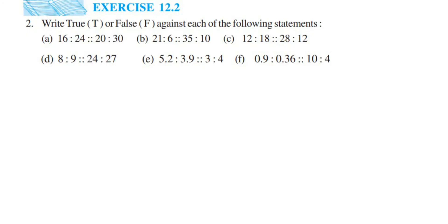Hey everyone, this is question 2 for exercise 12.2. The chapter is Ratio and Proportion of class 6. The question says: write true or false against each of the following statements. We have six questions and we have to see if they are in proportion or not. The sign used for proportion has two columns, and proportion means when two ratios are equal, we call them proportional.